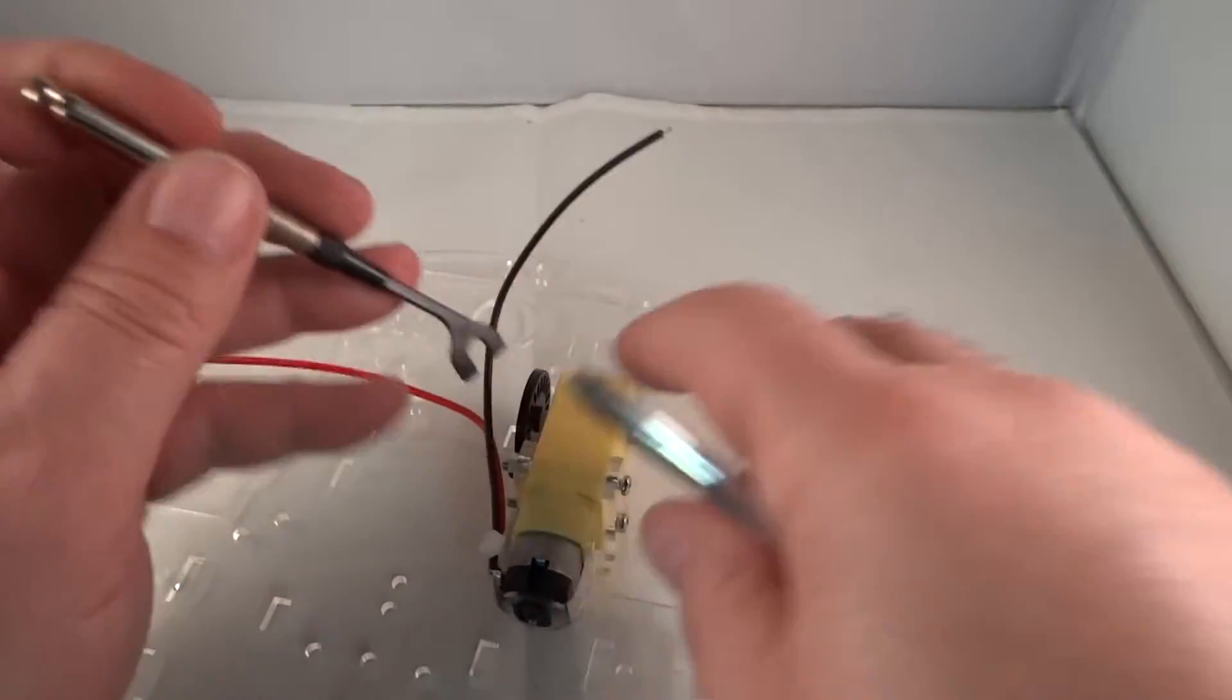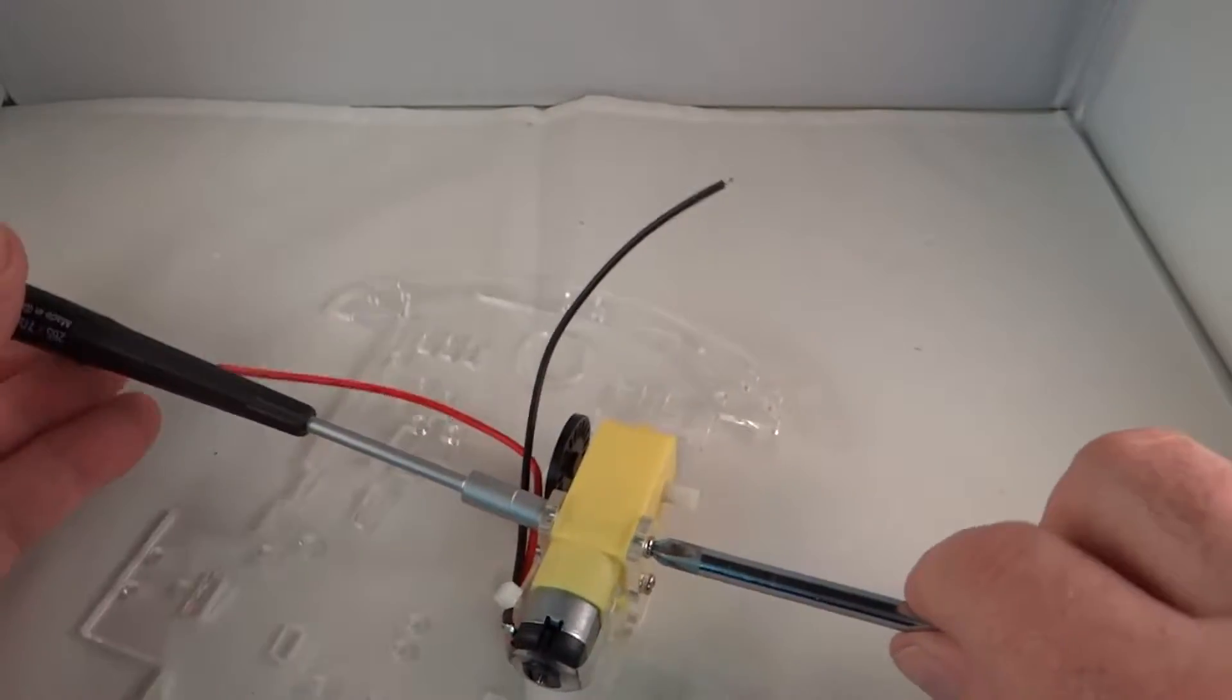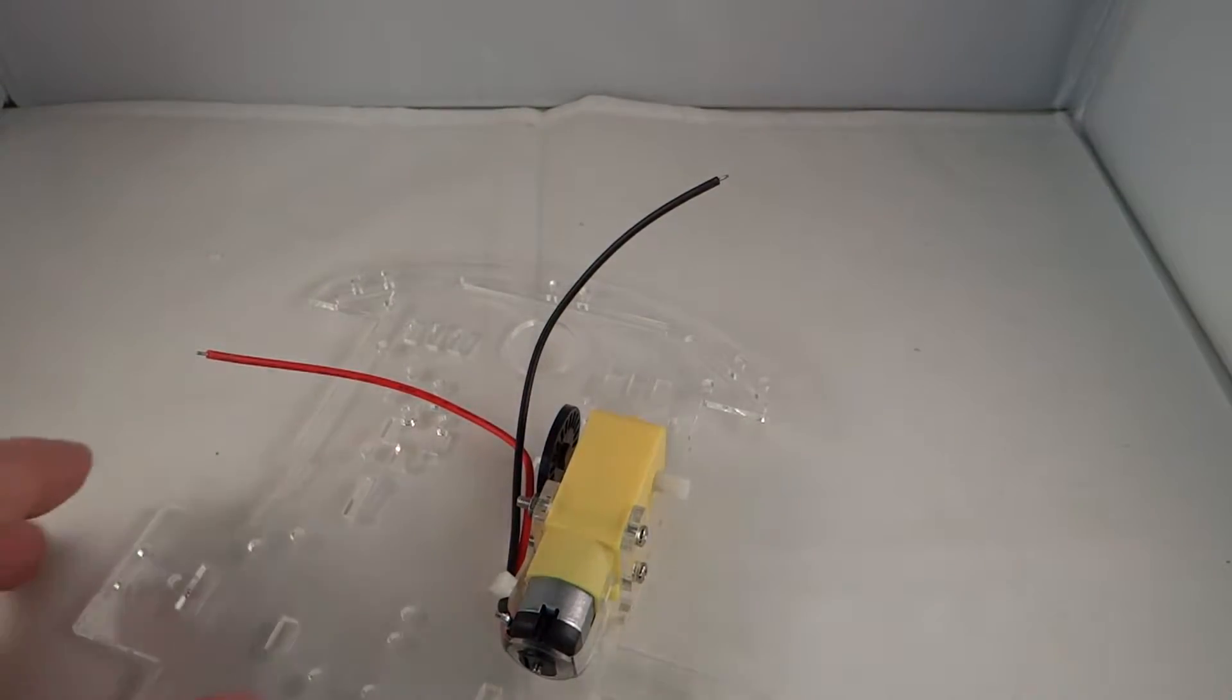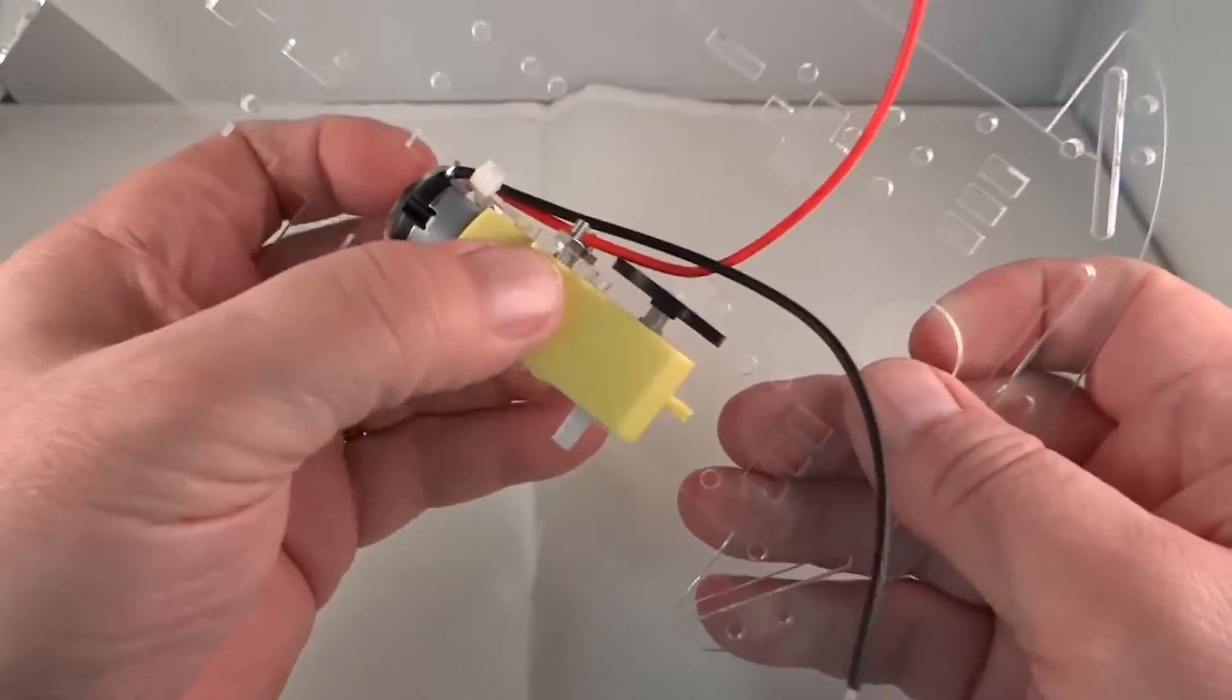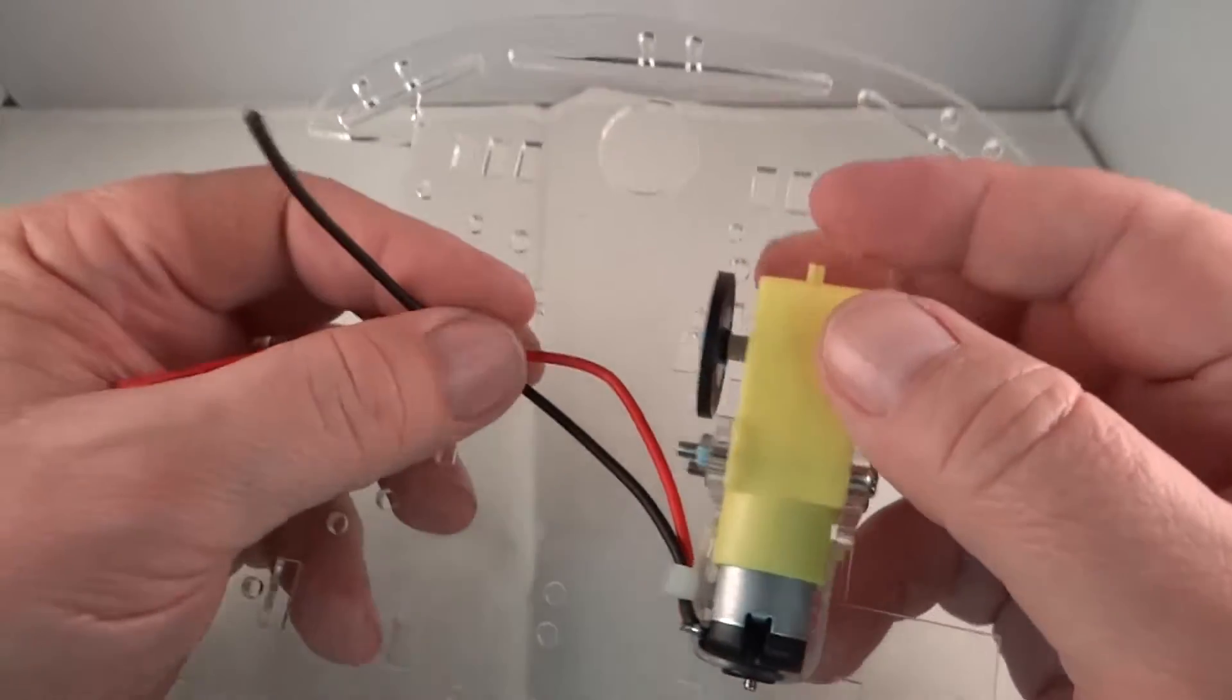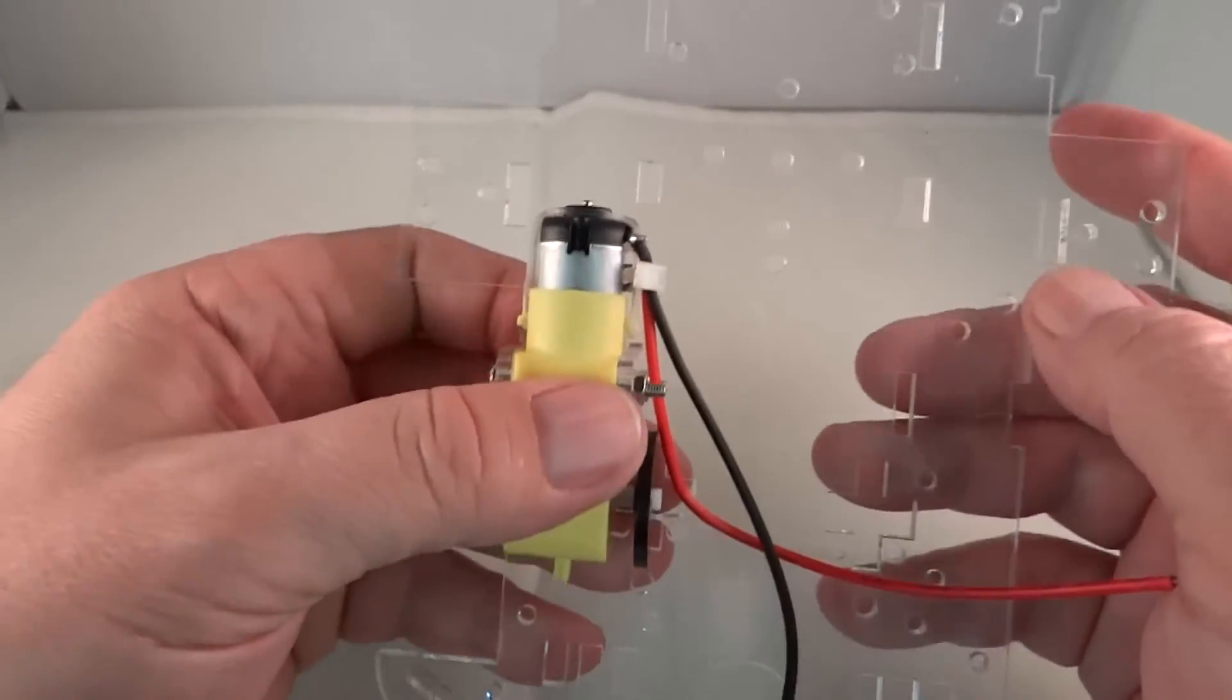We'll tighten these down pretty well. Don't want to break anything. Don't use your ultimate muscles, but some pretty good medium sized muscles. Now we've got a motor mounted. It's nice and tight, not going anywhere. Make sure the encoder wheel isn't going to rub on the chassis. It looks centered pretty well. We are good to go with this motor, and now we're going to mount the rest of the motors.